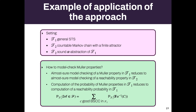If you want to compute the probability of some quantitative property in your complex system, you can reduce it to the computation of a reachability property in the original system using components given by the abstraction. The probability of some property equals the probability of some reachability property that you can actually compute and approximate.